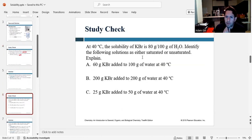So here's a problem involving some math. They tell you at 40 degrees Celsius, the maximum solubility of potassium bromide is 80 grams per 100 grams of water.